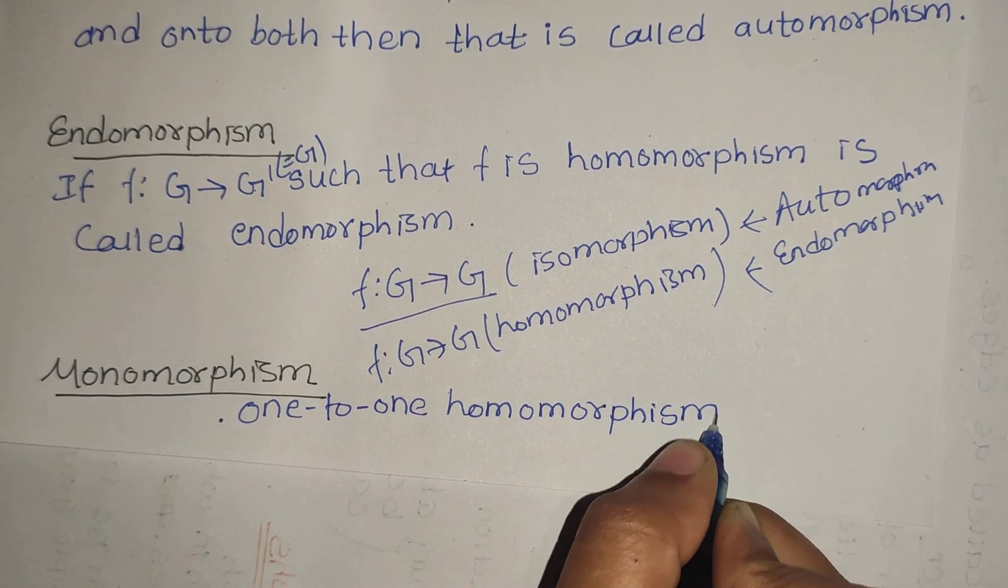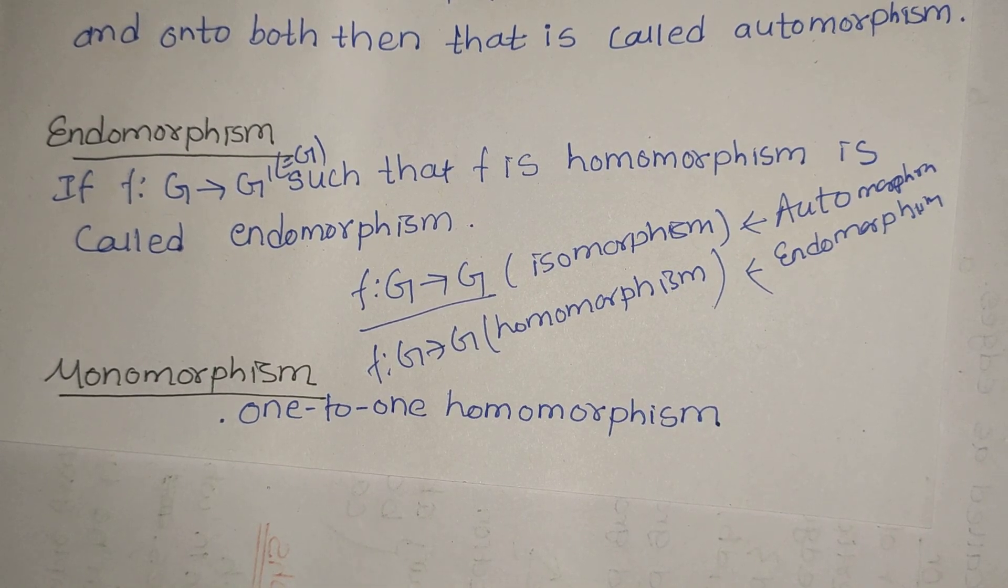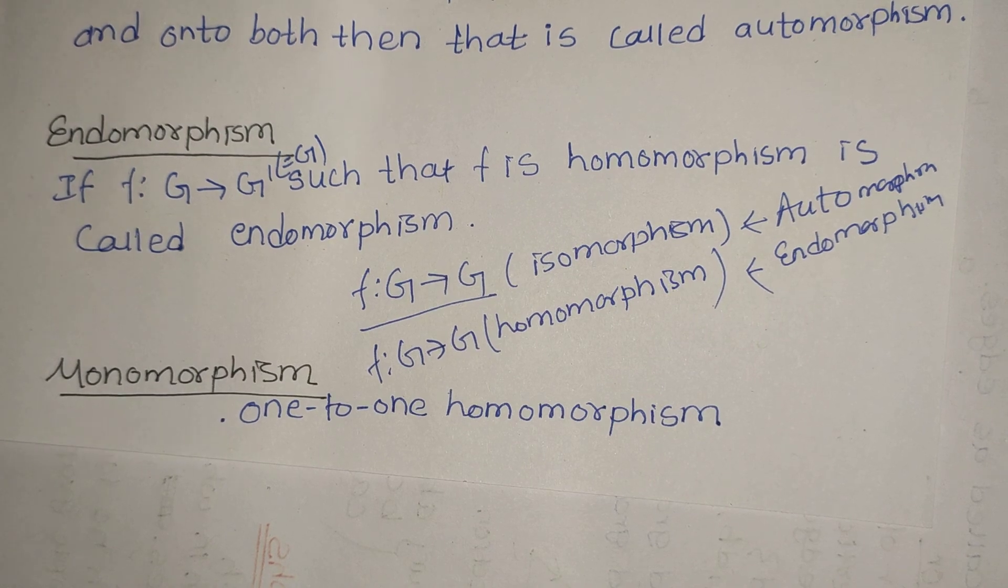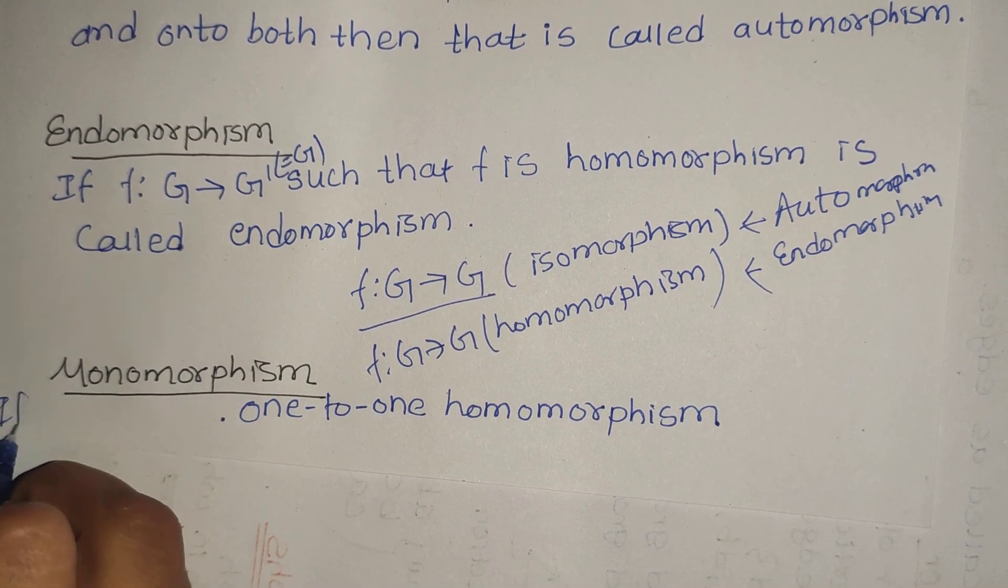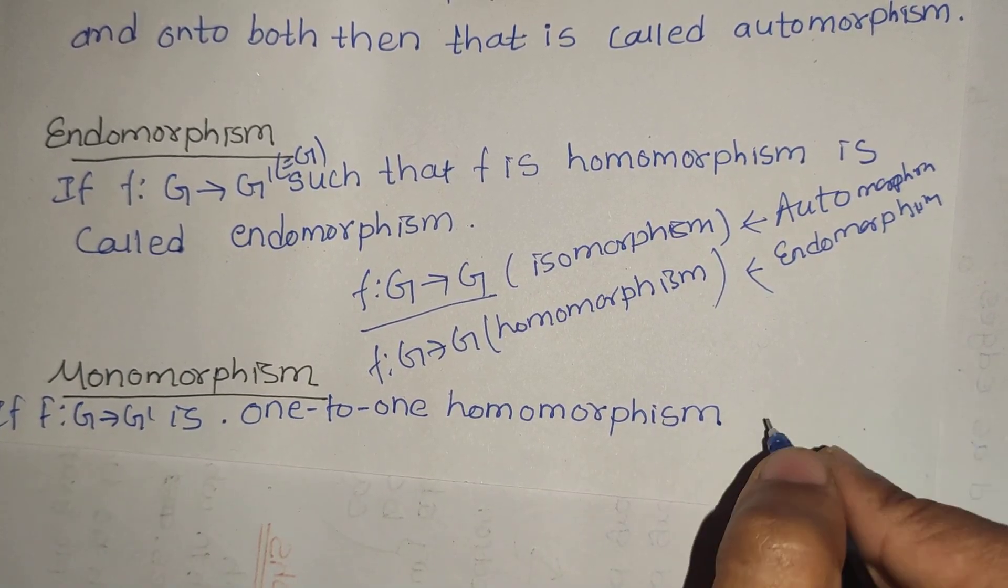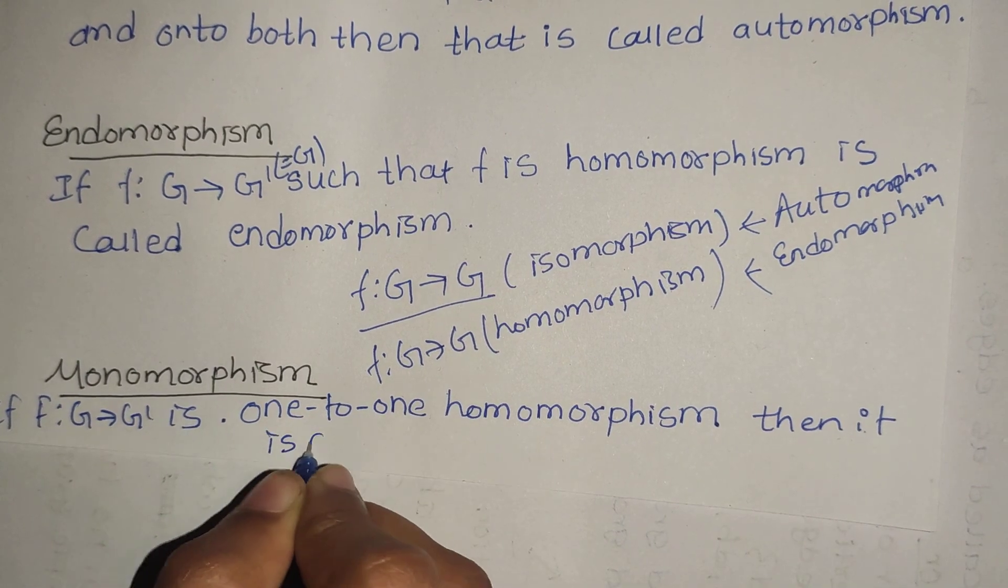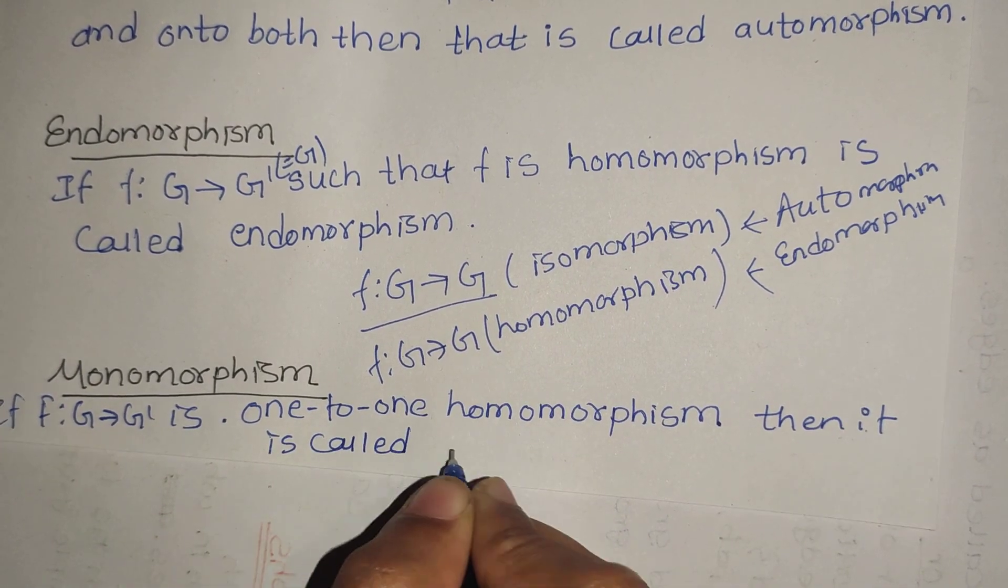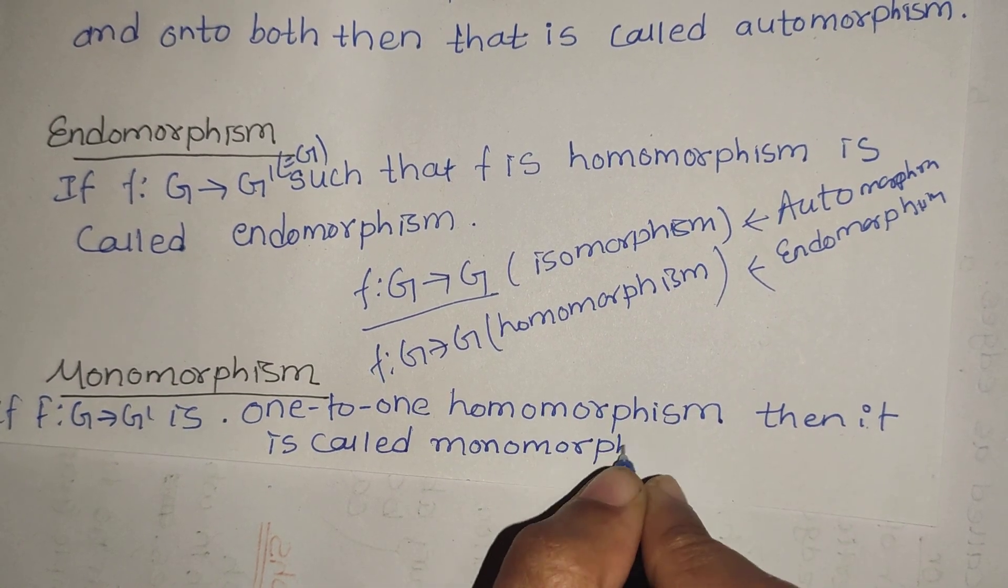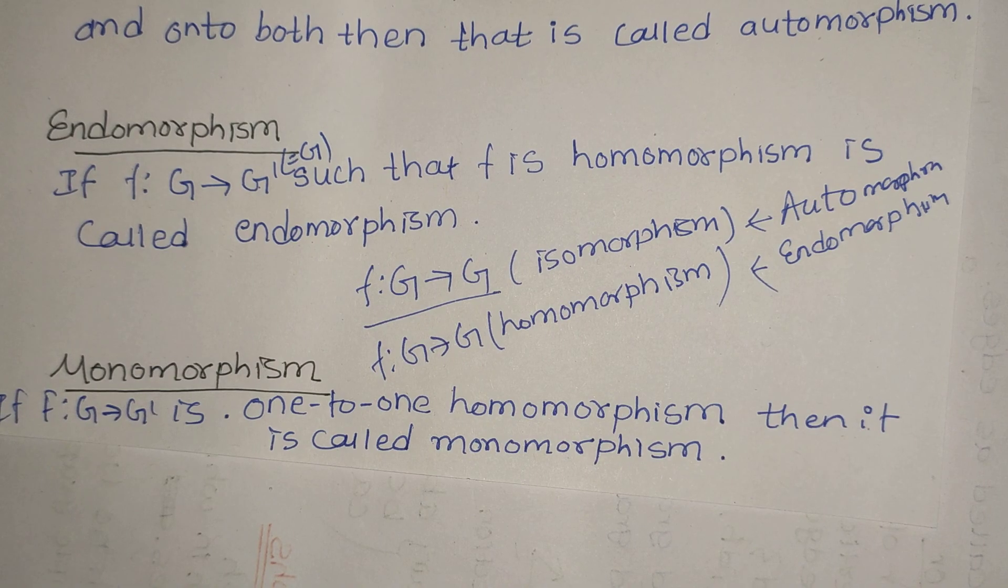One-to-one homomorphism. More formally: if f: G → G' is one-to-one homomorphism, then it is called monomorphism.